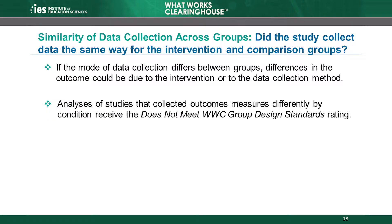We have discussed three of the four review requirements for outcome measures—validity, reliability, and no overalignment. The fourth requirement is that the study must collect the outcome measure in the same manner for the intervention and comparison groups, to ensure that post-intervention differences between groups result from the intervention and not from data collection differences. If the mode of data collection differs between groups, then the difference in the observed outcome may be attributable to something related to the outcome measure itself and not just to the intervention.